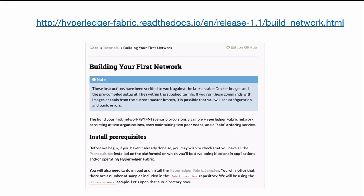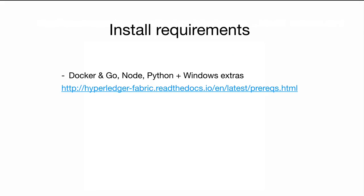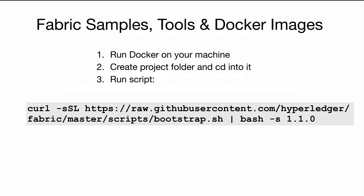You can find the official tutorial under this URL. In the first step what you need to do is install the requirements. This is mostly Docker and one of the following languages like Go, Node, or Python, depending on how you want to implement the chain code of Hyperledger. If you're on Windows you need to install a few extras. The easiest way is just to follow the instructions on the website.